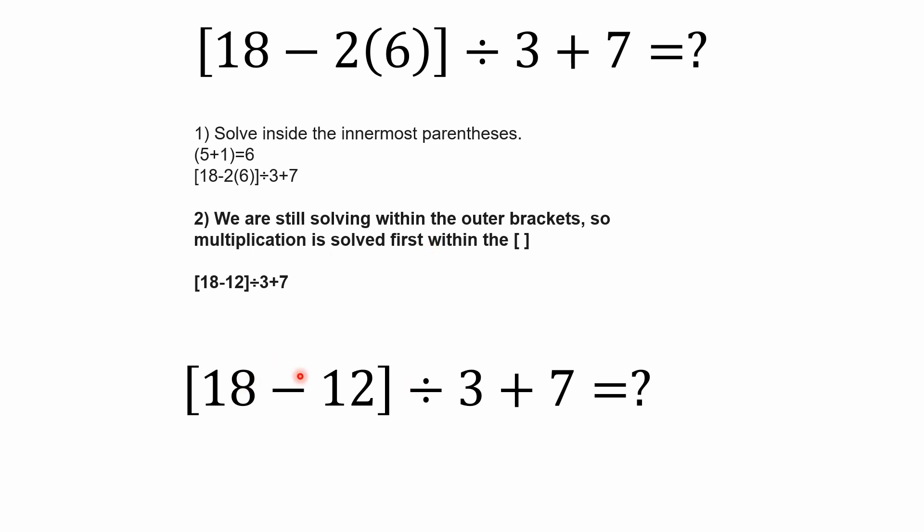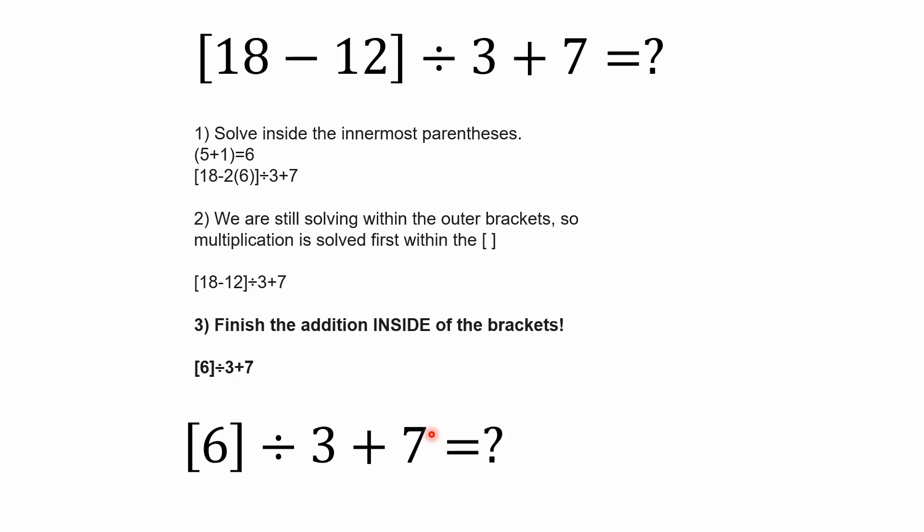So this second step here, we're solving within the outer brackets. So multiplication is solved first within those outer brackets. So we're left with 18 minus 12 inside of these brackets divided by three plus seven. This next step, it's pretty obvious that we're still dealing inside of these brackets. We haven't resolved them yet. 18 minus 12 is six. And the six is divided by three. We've done our parentheses. We've handled our brackets. We've done everything inside of them.